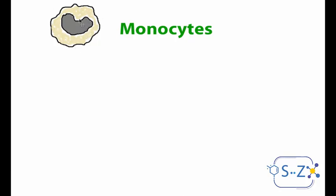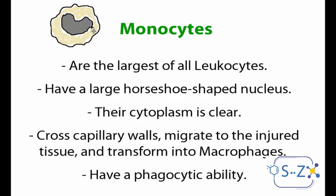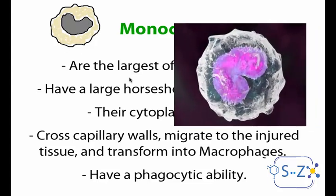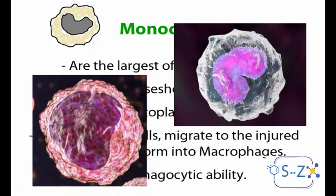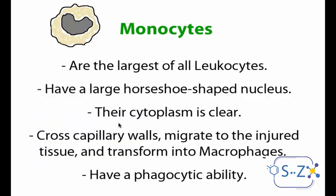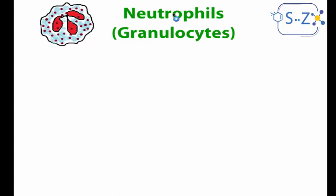Starting with the monocytes: they are very large in size and have a special horseshoe- or bean-shaped nucleus that appears clearly under the microscope. They are the largest of all leukocytes, and their cytoplasm is clear with nothing obviously special in it. Monocytes can cross the capillary walls, migrate to injured tissue, and when they reach it, they transform into macrophages — which are larger and have a phagocytic ability, meaning they can eat the pathogen or any harmful substance.